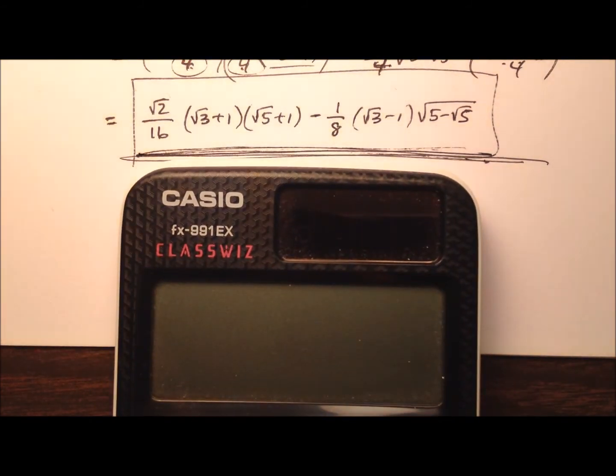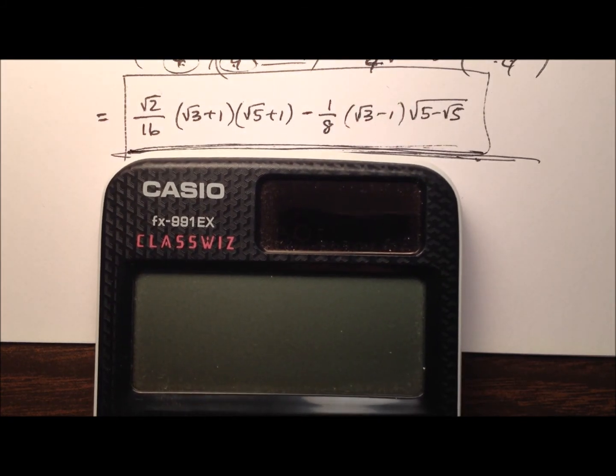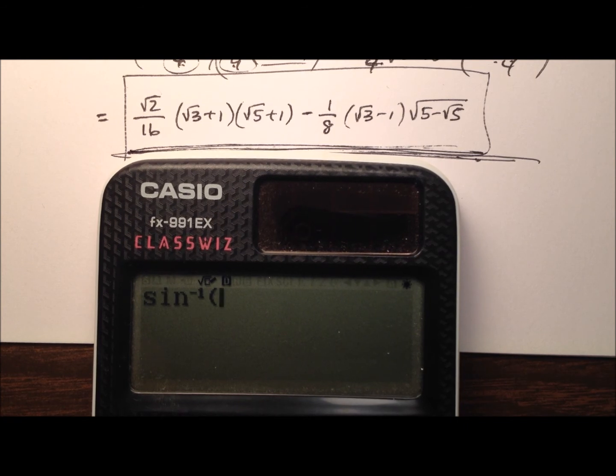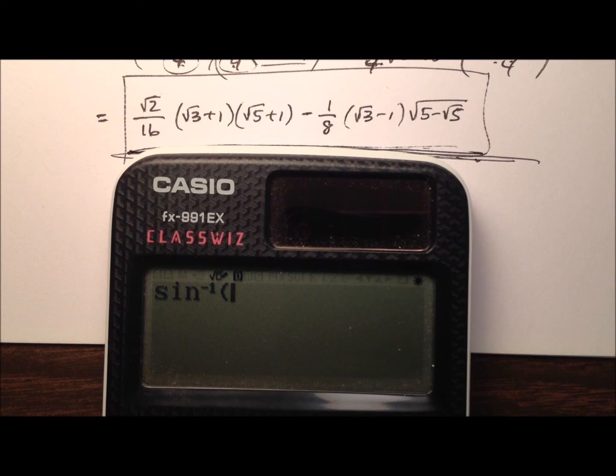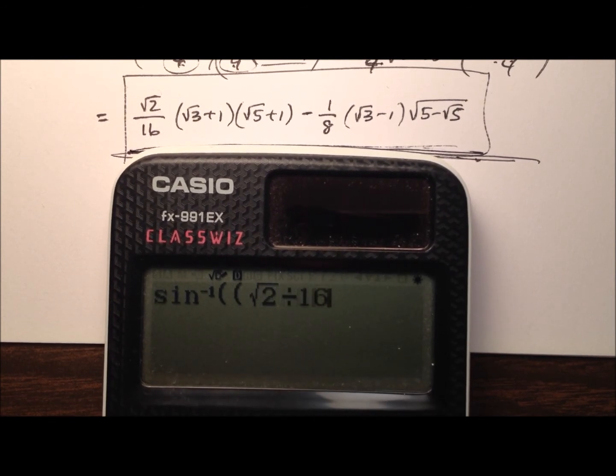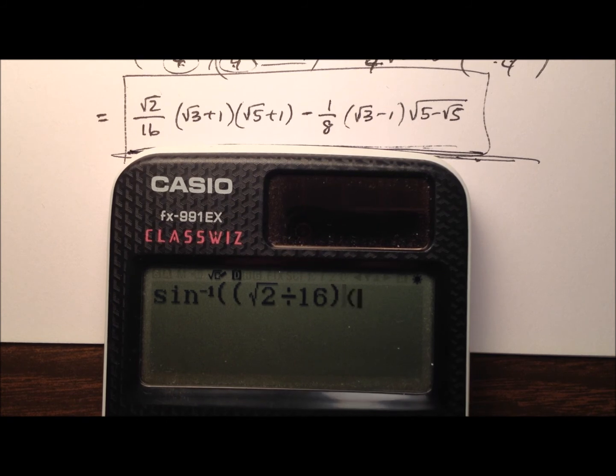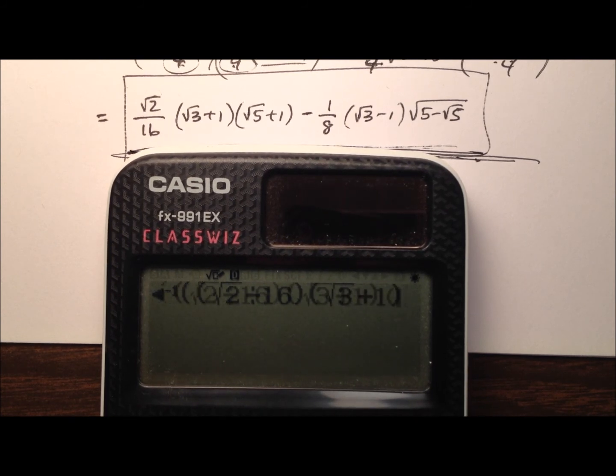So here's my calculator ready to go. I'm going to use the inverse of sine, so second sine. And I'm just going to go ahead and put this entire expression in and then see if I get 39 degrees at the end. And I hope so. So we'll start by saying the square root of 2 divided by 16 and we're going to multiply that by the square root of 3 plus 1 and multiply that by the square root of 5 plus 1.